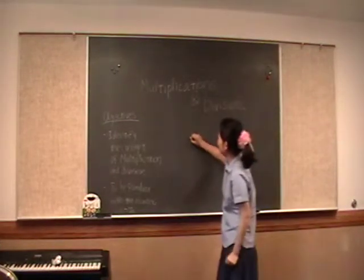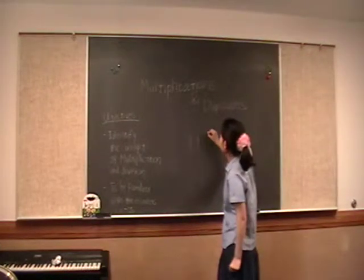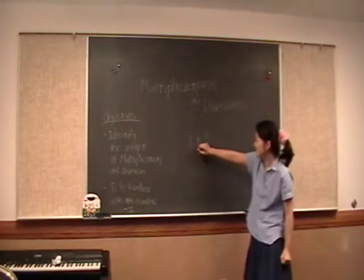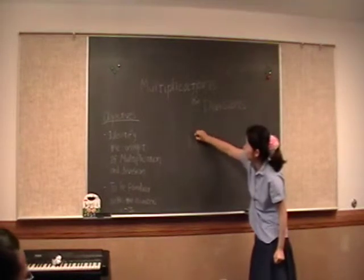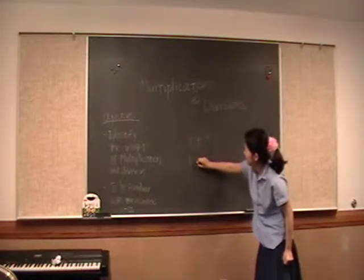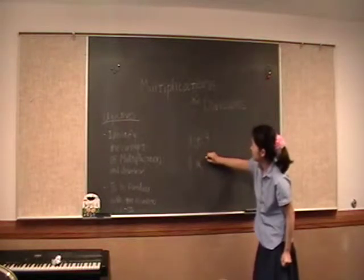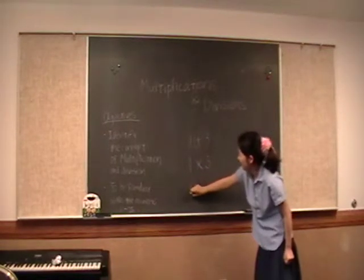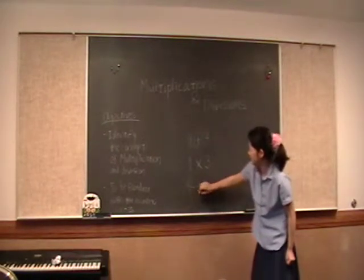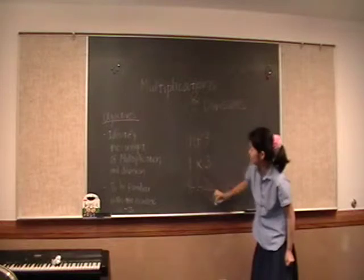We all know what this sign means right here, right? Add. Yes, it's plus. It's addition. But this time we're going to learn about this x thing that's in between the numbers and this weird looking symbol that's in between. This is a division symbol.